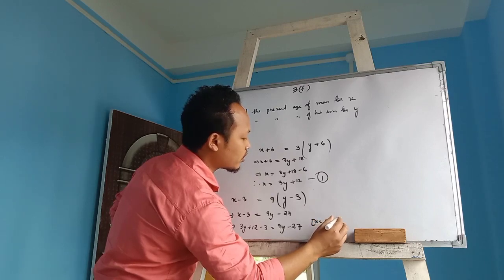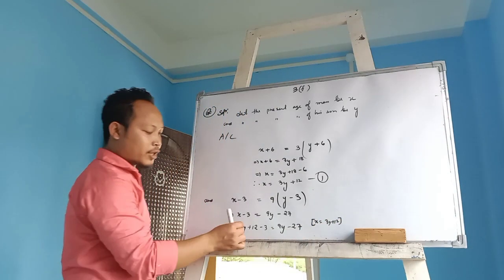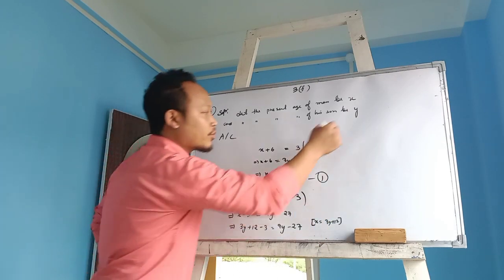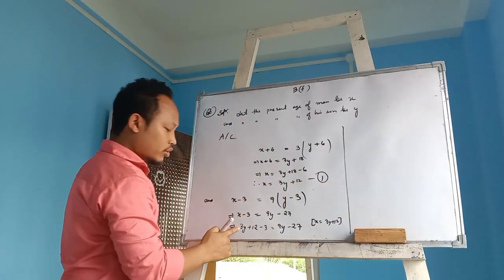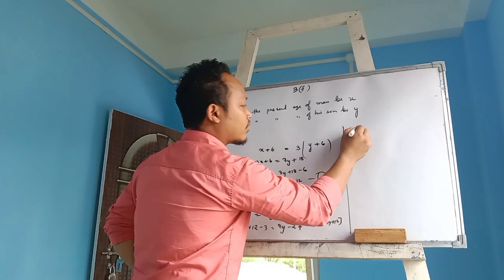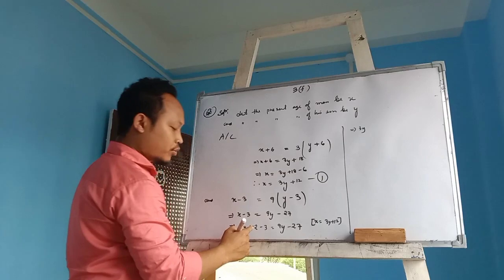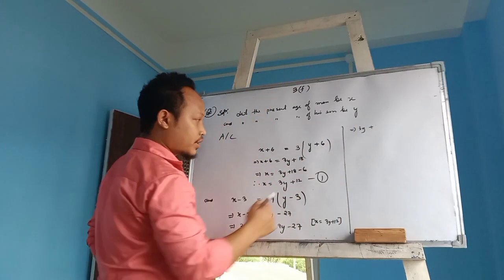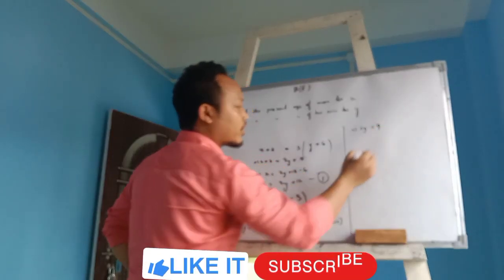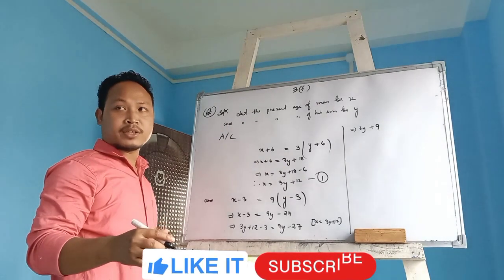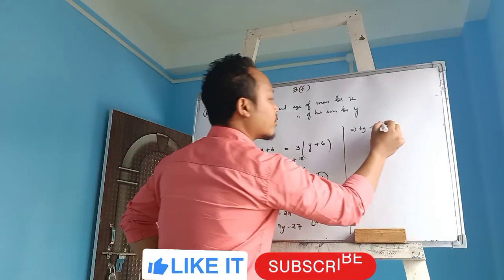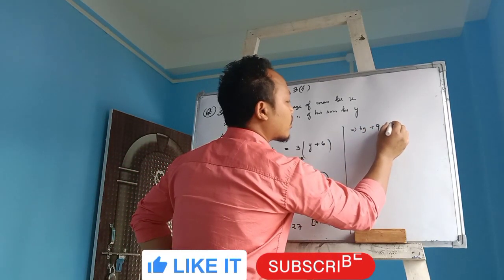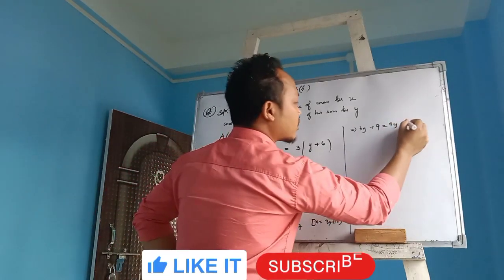3y plus 12 minus 3... 12 minus 3 is 9, yes or no? 12 minus 3 is 9. So 3y plus 9 equals 9y minus 27.